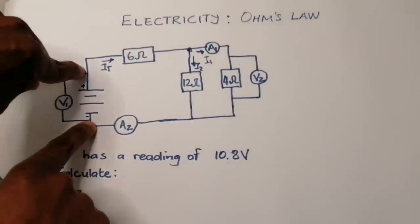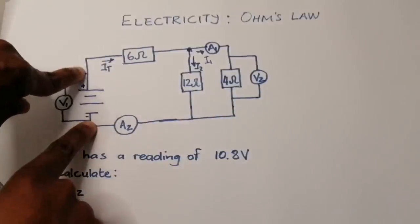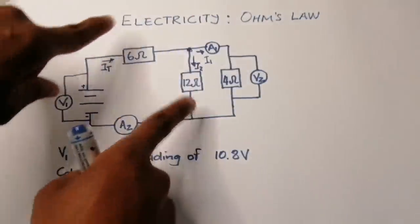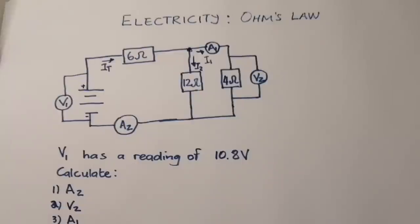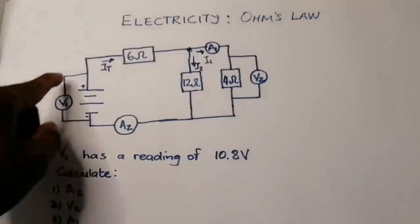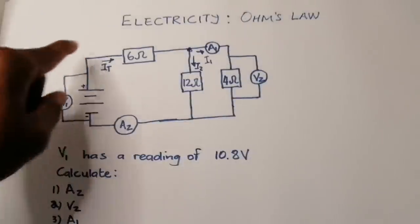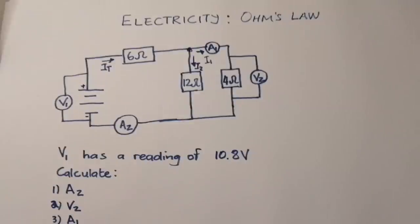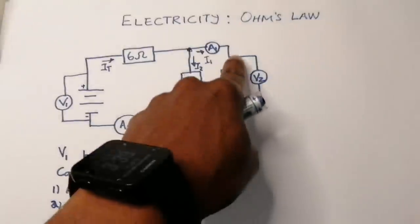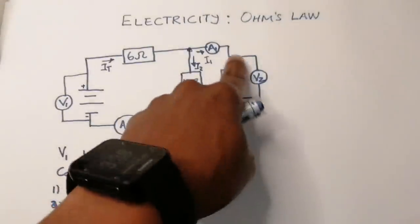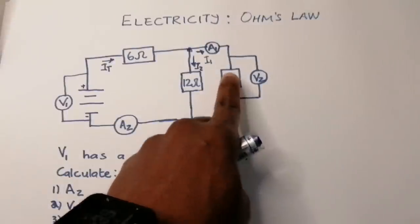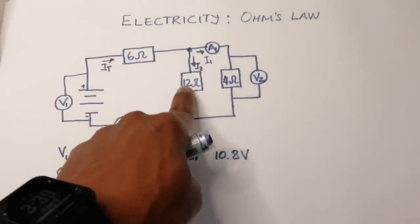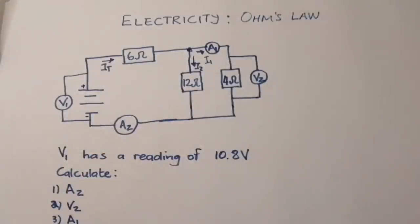The voltmeter measures across the battery, which is supplying the entire circuit. So that voltage corresponds to the resistance of the entire circuit. V2 is the voltage only across the 4 ohm resistor. Because the 4 ohm is in parallel with the 12 ohm, the voltage V2 is the same as the voltage across the 12 ohm resistor.